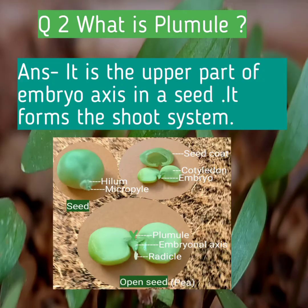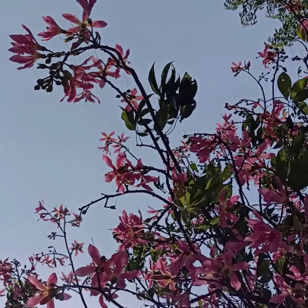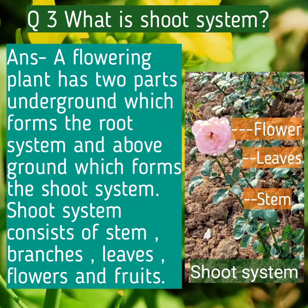Question number two: What is plumule? Answer: It is the upper part of the embryonal axis in a seed. It forms the shoot system. Question number three: What is shoot system? Answer: A flowering plant is divided into two parts.